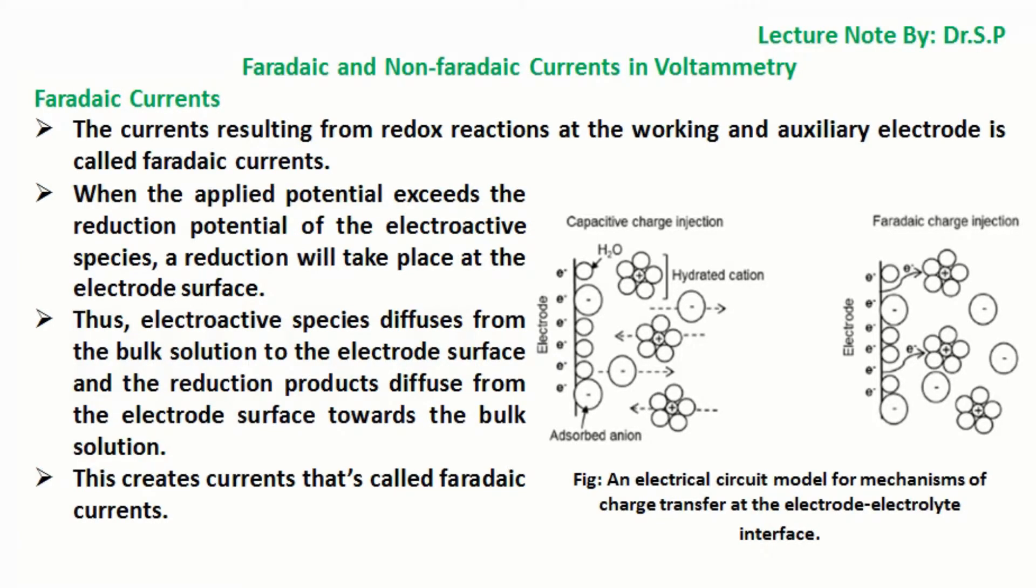The currents resulting from redox reactions at the working and auxiliary electrode are called faradaic currents. When the applied potential exceeds the reduction potential of the electroactive species, a reduction will take place at the electrode surface.